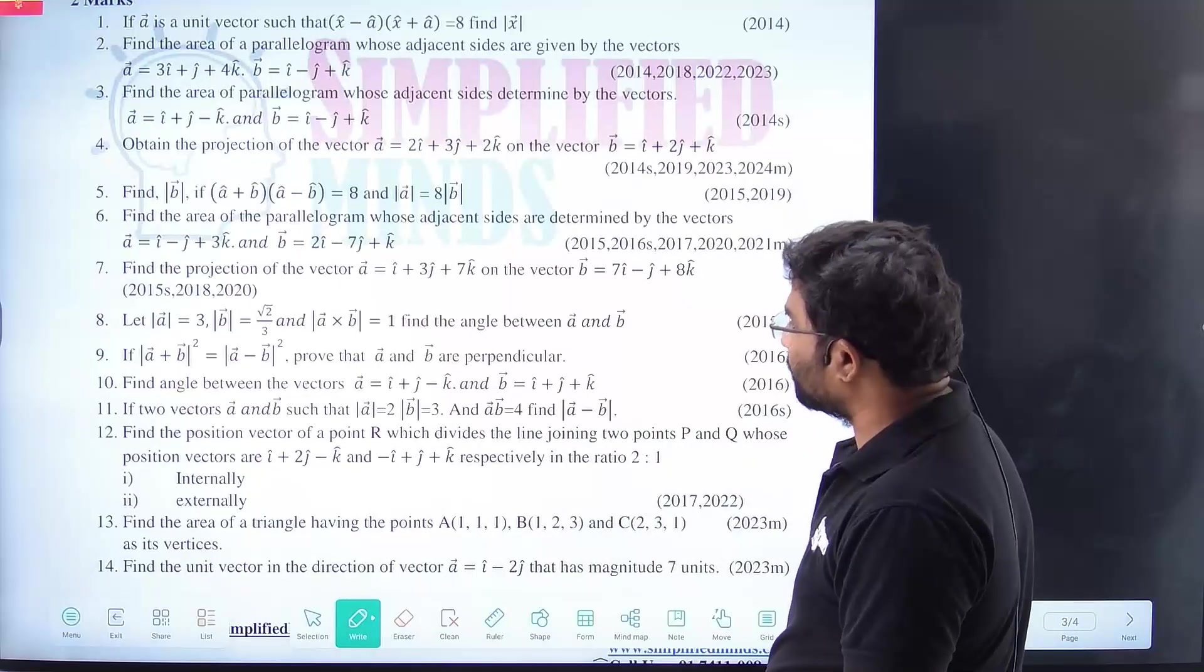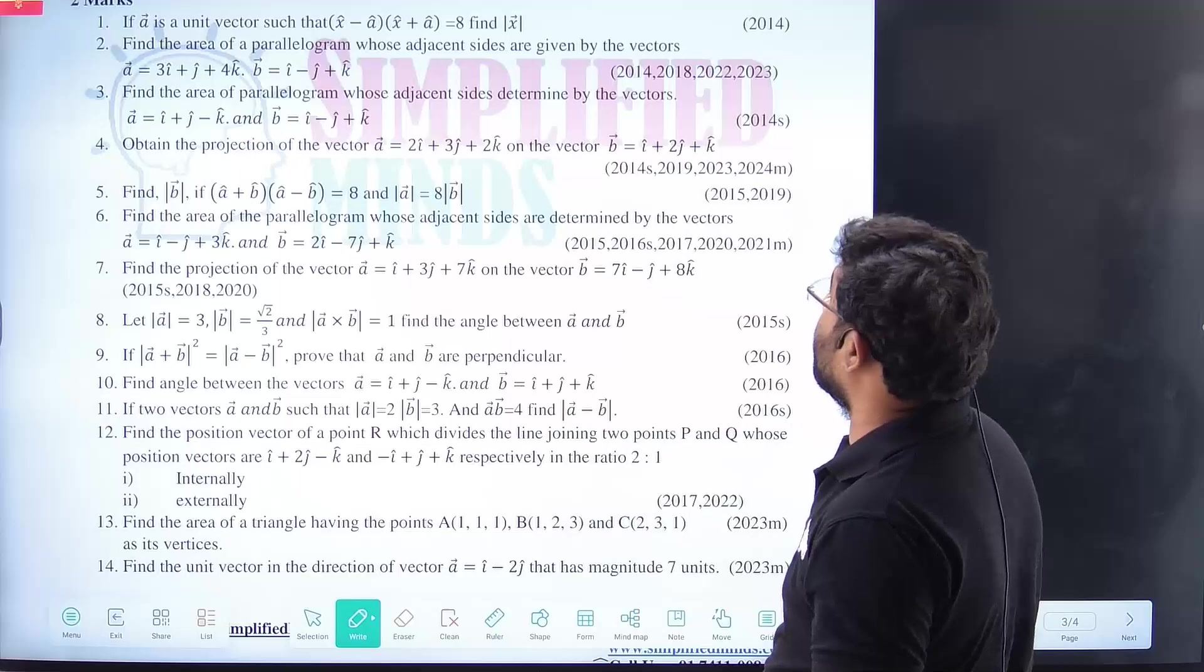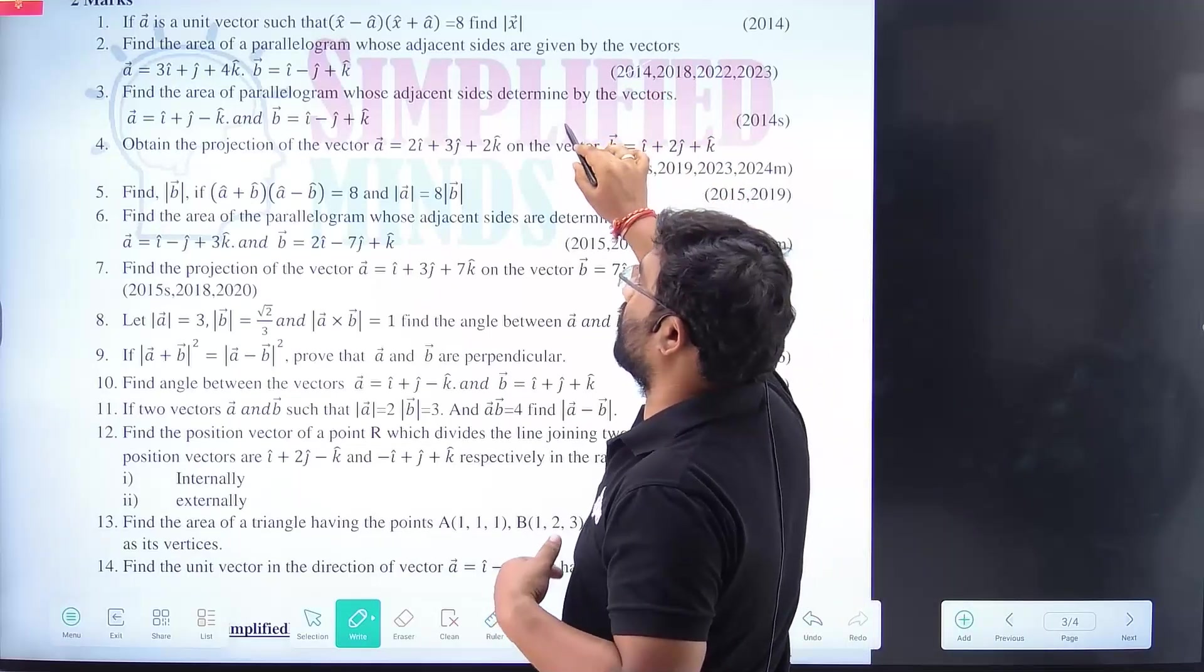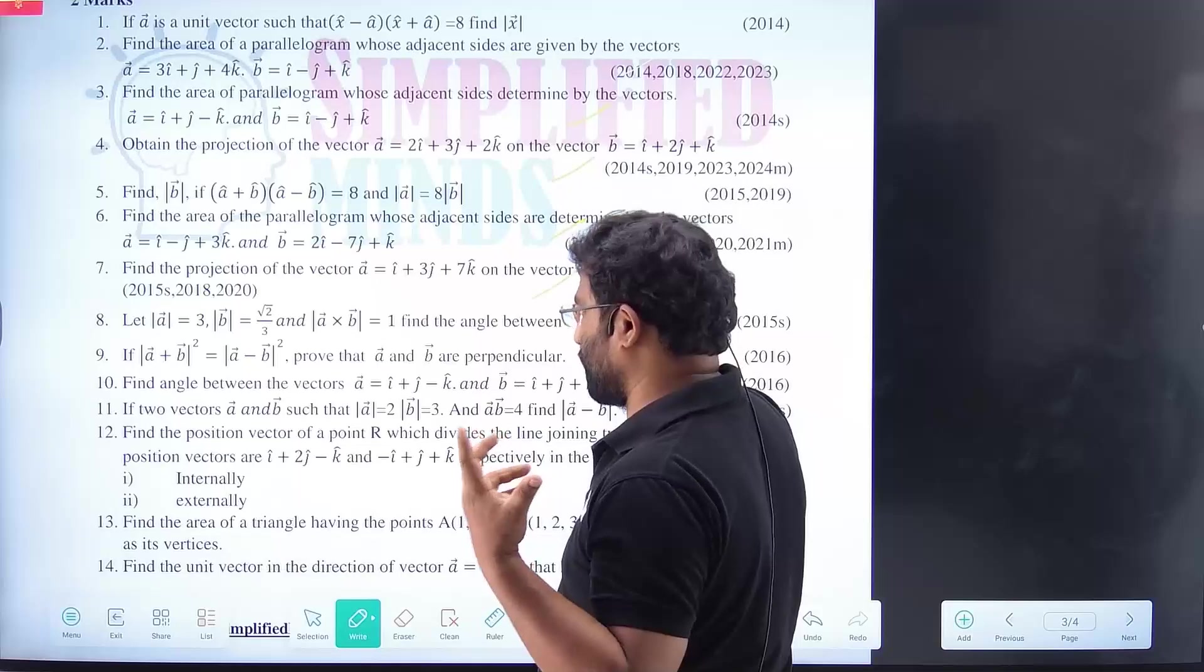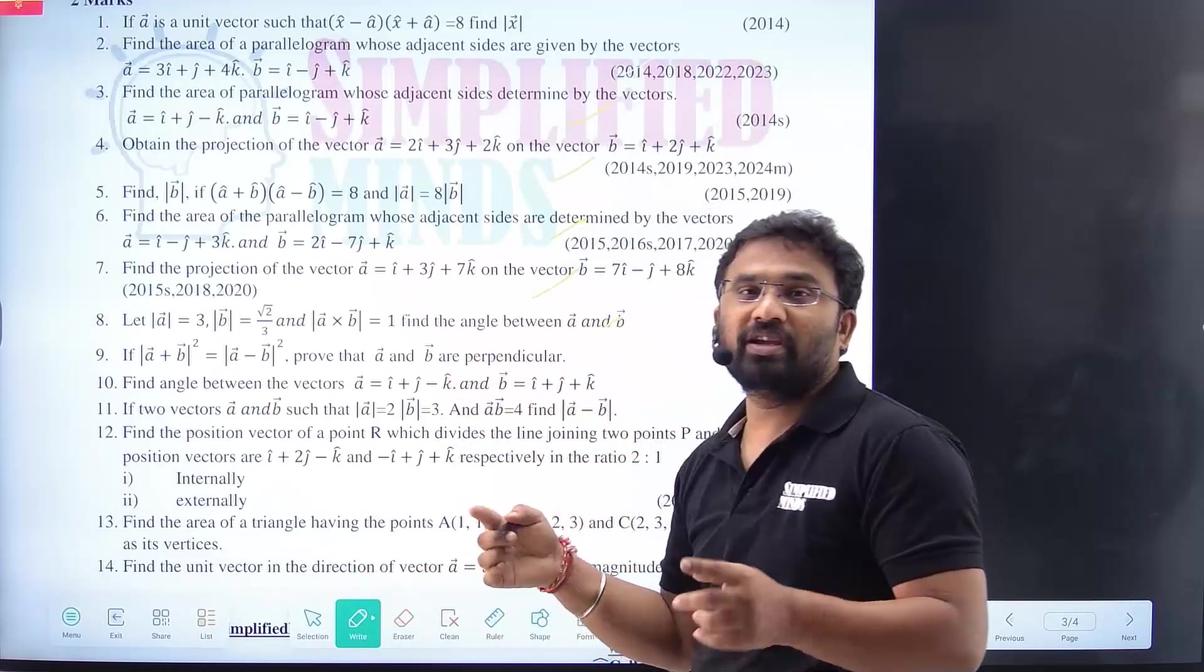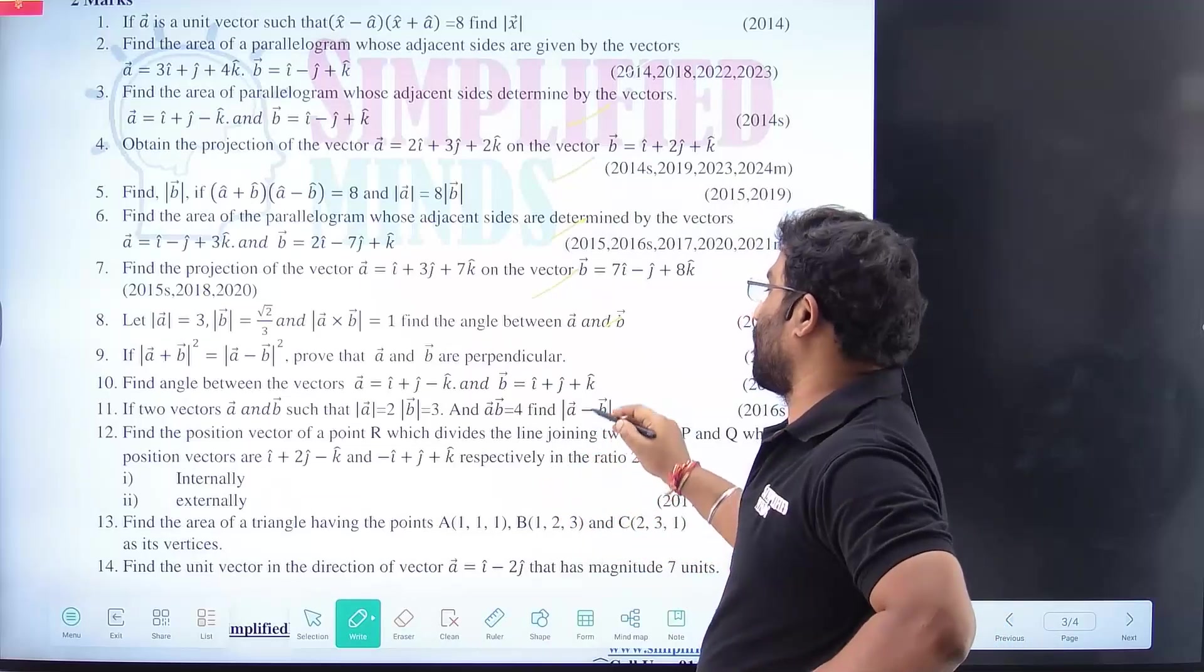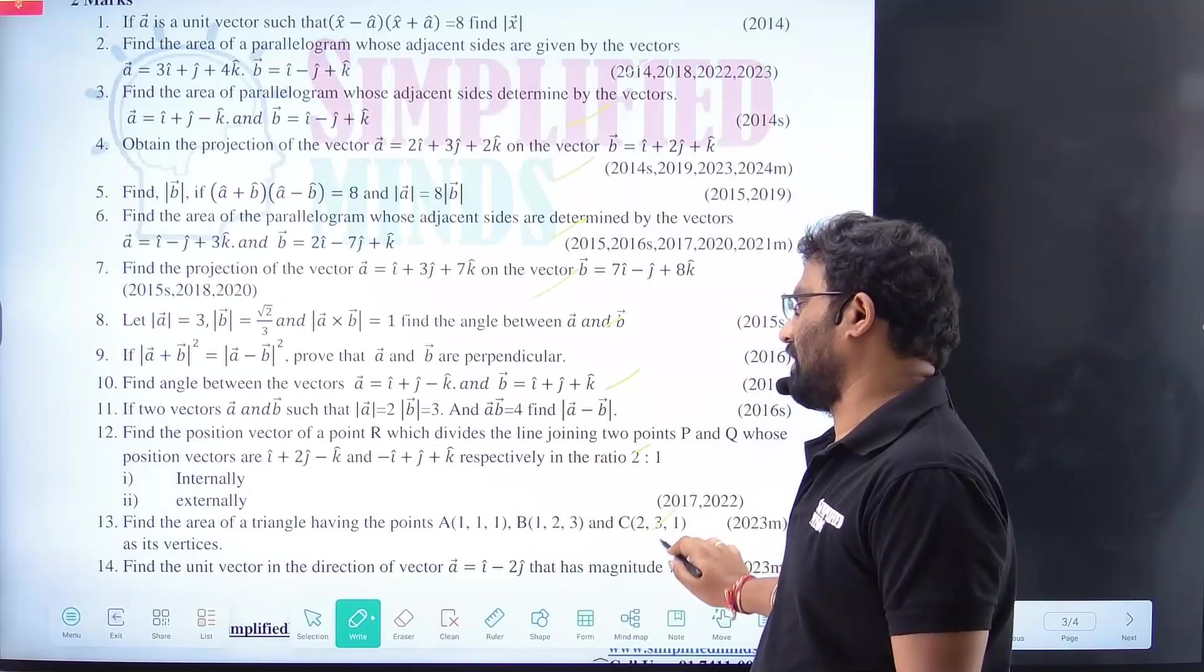Coming to the two markers. So two markers. Similar type of questions. Area of parallelogram. Very important. Parallelogram. Projection important. Parallelogram. Projection. Find the angle between them. Prove that they are perpendicular. You are sure. A dot B is equal to zero. Again. Angle between them. Something similar questions. Same.